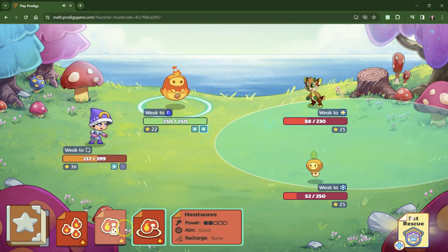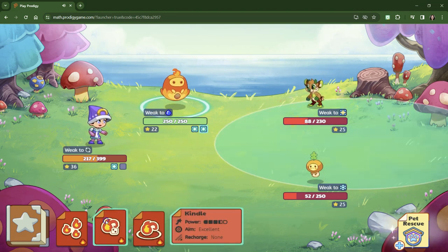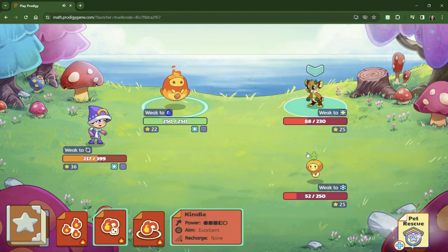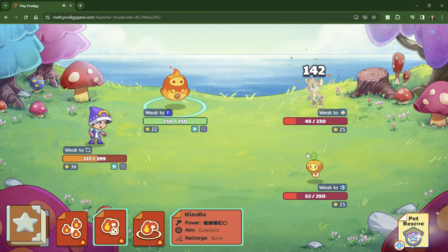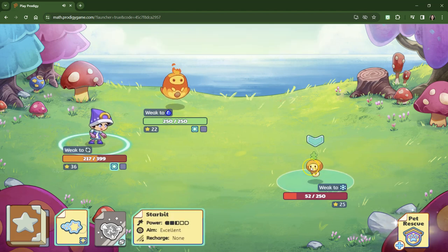Let's see. What spell is the best one? Kindle seems to be my best spell. Make it count! Yes! Starbit with 52. Let's see if we can get it to happen and win this battle.